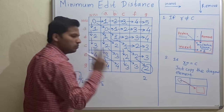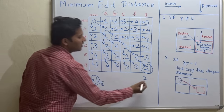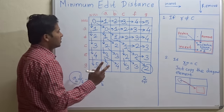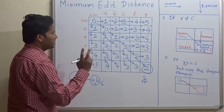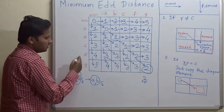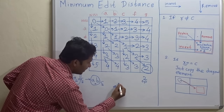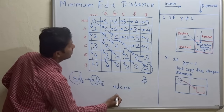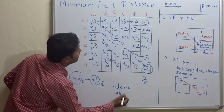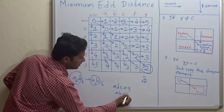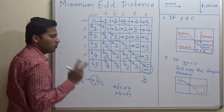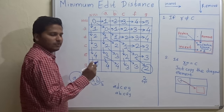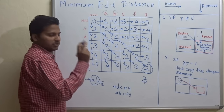Two operations are required to convert string 'adceg' to 'abcfg'. Now I will tell you what those operations are.